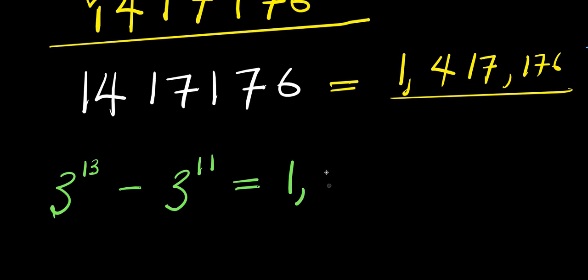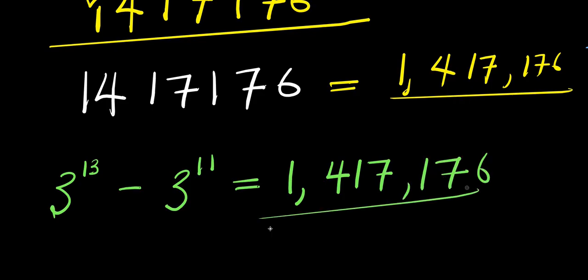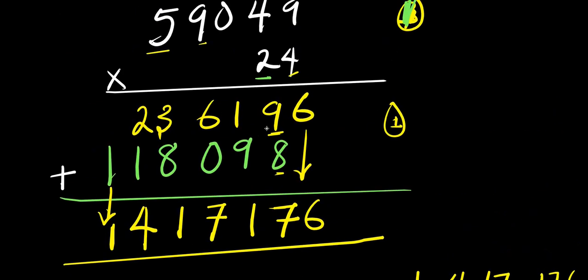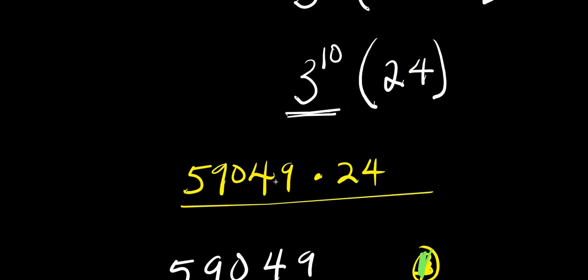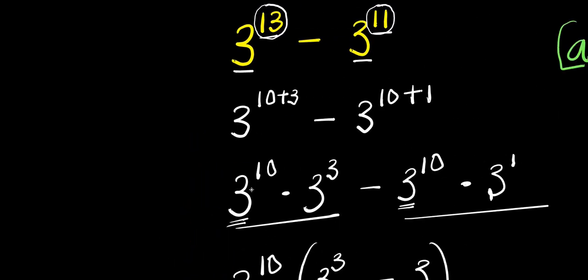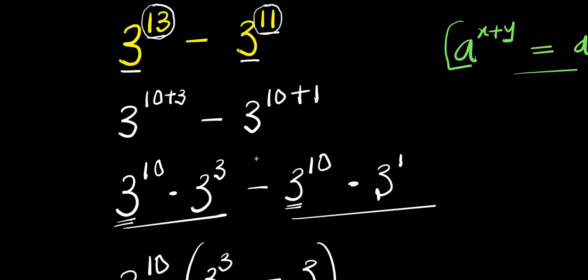That becomes the answer for 3^13 minus 3^11, which equals one million, four hundred and seventeen thousand, one hundred and seventy-six (1,417,176). We achieved this without the use of a calculator whatsoever. If you enjoyed this video, don't forget to subscribe and share. Thank you, and see you in our next video. Special shout-out to all the ones that have been dropping messages — I appreciate you all!